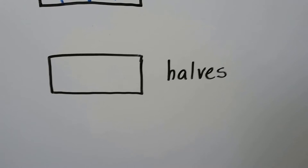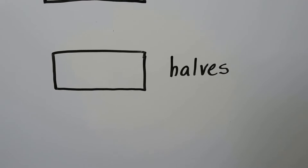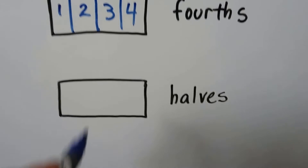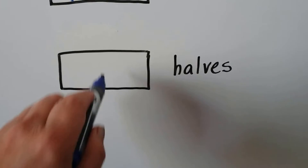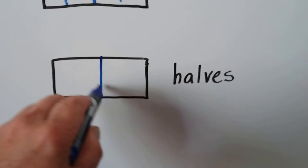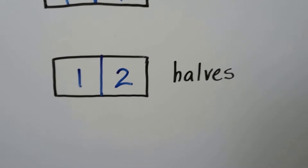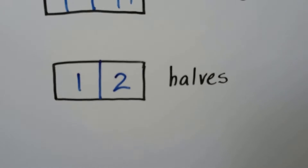How about if we wanted to make halves? Just like we did on the other one, we just draw a line down the middle. Halves means two equal parts — one, two.